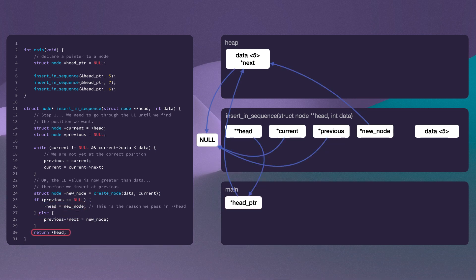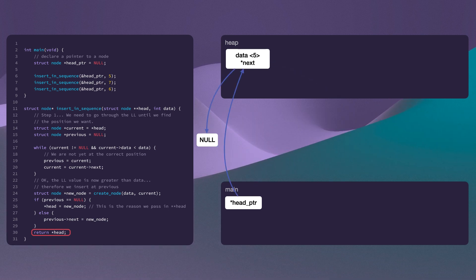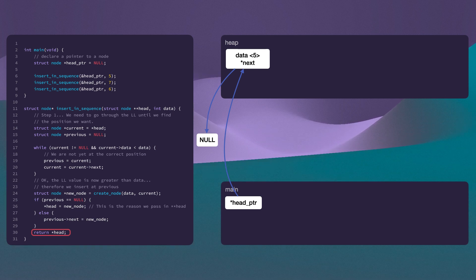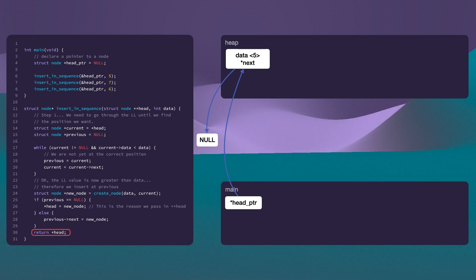That ends the function. And as we know, when a function ends its stack frame is deleted and all the variables are deleted. What we're left with is a simple layout where we have this head pointer variable in main pointing to a location on the heap, which happens to store a node. Its value is five and it points to null.